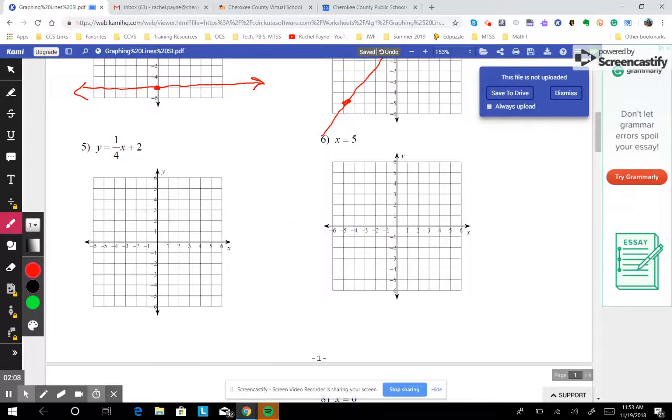Do two more. This one says you begin at plus 2. Remember, the number on the end is always your starting point. And from there, you rise 1, run 4. Rise 1, run 1, 2, 3, 4.